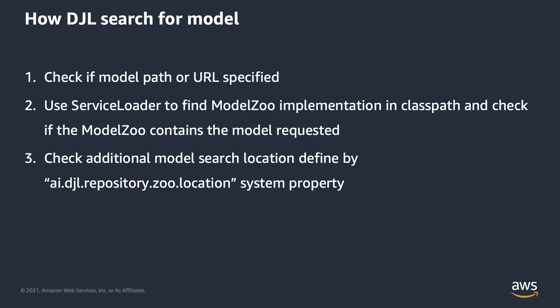DJL's built-in ModelZoo stores metadata in a centralized location, but you are not limited to only using DJL's built-in ModelZoo. You can create your own ModelZoo and load your model from anywhere you want. You can even point to any location as an AdHocModelZoo, and DJL will load models from that location. If you specify the model path or URL in the criteria API, DJL will load the model from there first. Then DJL will use ServiceLoader to locate any ModelZoo implementation available in the classpath and scan for those ModelZoos.